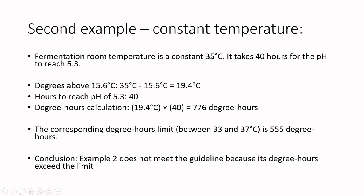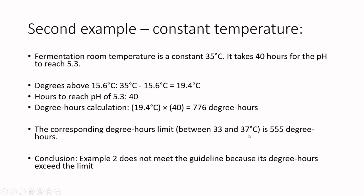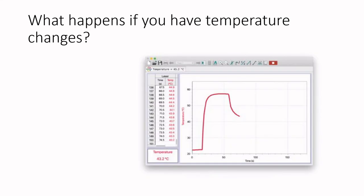Example 2: constant fermentation at 35°C, and it takes 40 hours to reach pH 5.3. Calculate the difference: 35 − 15.6 = 19.4°C. Then: 19.4 × 40 = 776 degree hours. Since the maximum temperature is between 33°C and 37°C, the limit is 555 degree hours — and we've exceeded that by quite a bit. Example 2 does not meet the guideline, so we need to hold and test this product before it can be released for sale.